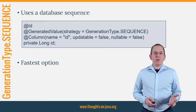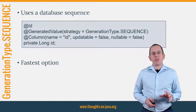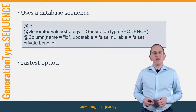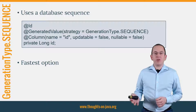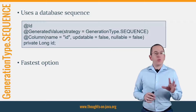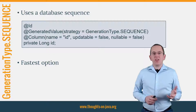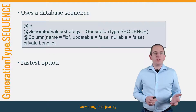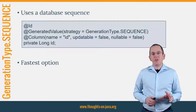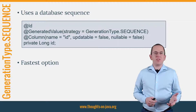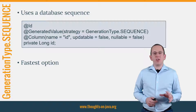The GenerationType SEQUENCE is my preferred way to generate primary key values and uses a database sequence to generate unique values. This allows Hibernate to apply several optimization strategies and to decouple the generation of the primary key value from the insert operation. That makes GenerationType SEQUENCE the fastest option to generate unique primary key values with Hibernate. If you don't provide any additional information, Hibernate uses its default sequence. You can change that by referencing the name of a sequence generator in the generator attribute of the GeneratedValue annotation.